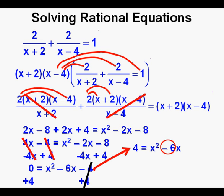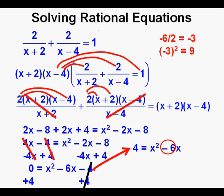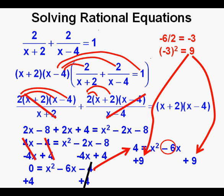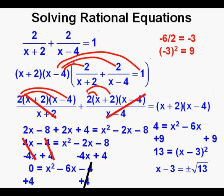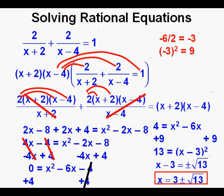To complete the square on the right side, we take the coefficient of the linear term, which is negative 6. Negative 6 divided by 2 equals negative 3, and negative 3 squared is positive 9. So we add 9 to both sides of the equation to complete the square, giving us 13 equals quantity x minus 3 squared. Taking the square root of both sides, we have x minus 3 equals plus or minus the square root of 13, and that becomes x equals 3 plus or minus the square root of 13. On a number line, one root is between negative 1 and 0, and the second solution is between 6 and 7.